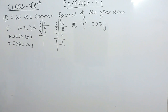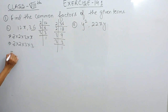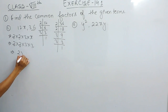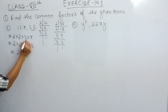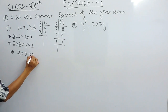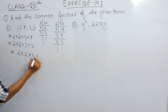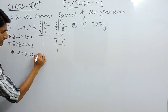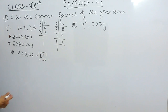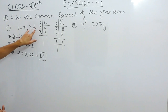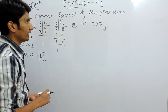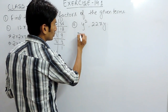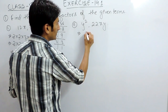Now we find the common factors. We have 2 as a common factor, again 2 as a common factor, and 3 as a common factor. Multiplying these together gives 12, which is the required answer. So 12 is the common factor of 12x and 36.